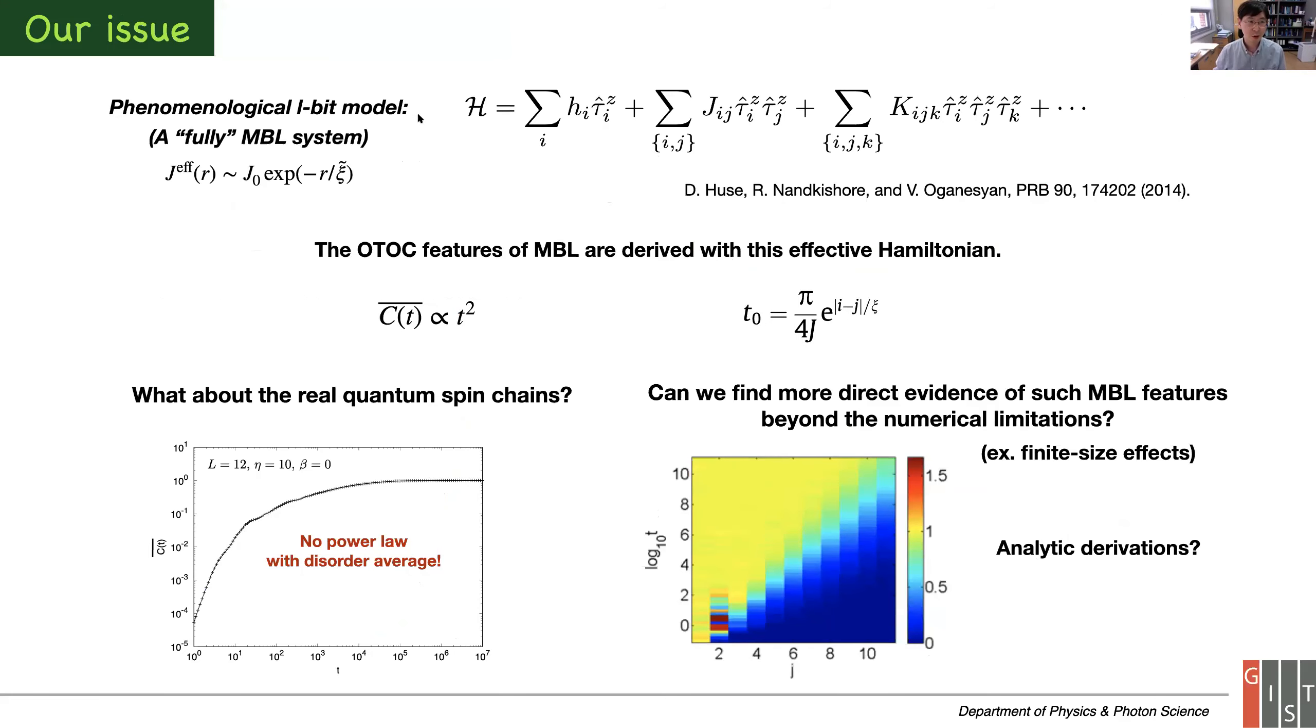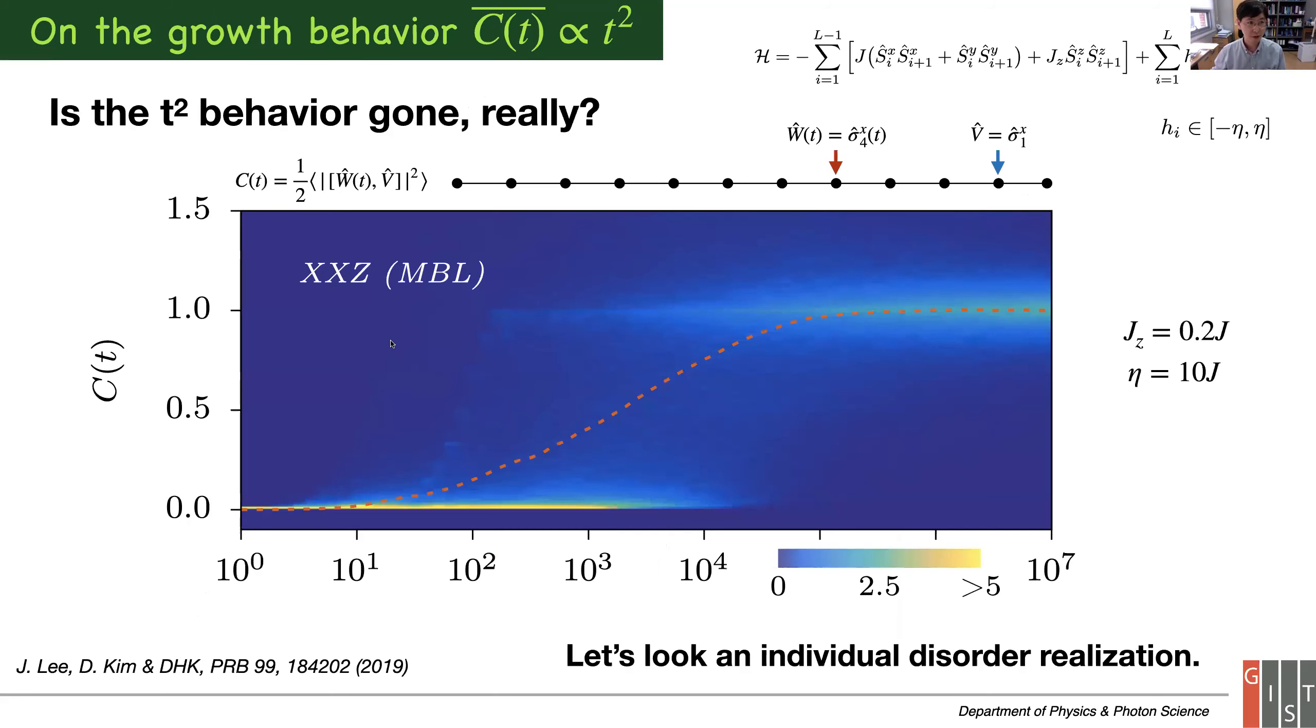So our goal is to study these OTOC features - the gross feature and logarithmic light cone features without aid of the LB model. We're trying to derive it analytically to confirm this phenomena and see why this is not happening in numerics.